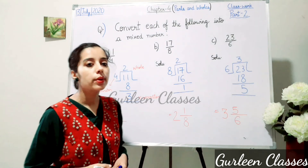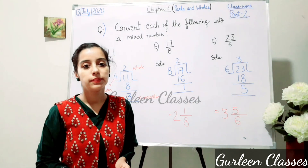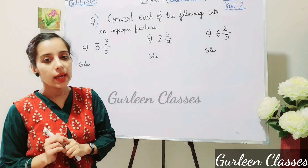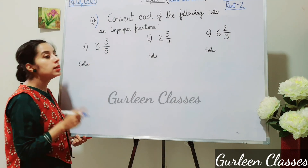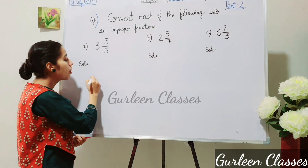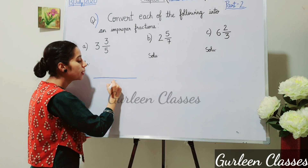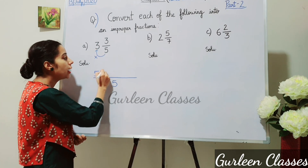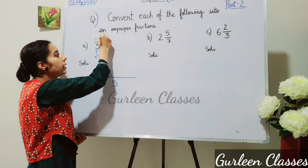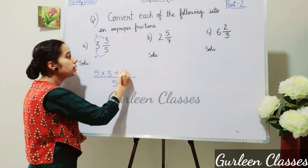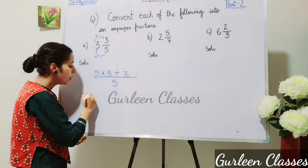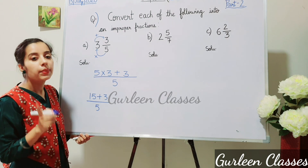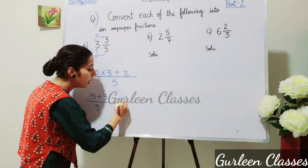So students, I hope now you can convert these fractions into mixed numbers. Next question: convert each of the following into improper fractions. Part A: 3 whole 3/5. The denominator is 5. Multiply the denominator by the whole: 5 × 3 = 15. Then add the numerator: 15 + 3 = 18. So the answer is 18/5.